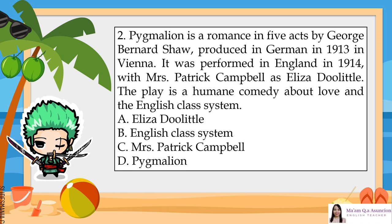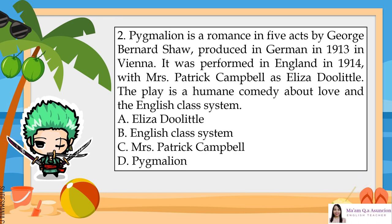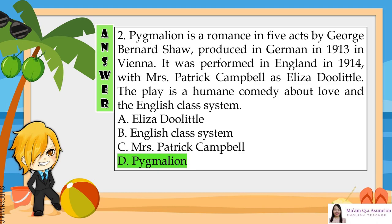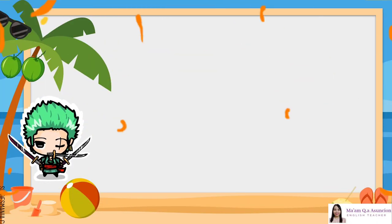2. Pygmalion is a romance in five acts by George Bernard Shaw, produced in German in 1913 in Vienna. It was performed in England in 1914, with Mrs. Patrick Campbell as Eliza Doolittle. The play is a humane comedy about love and the English class system. A. Eliza Doolittle. B. English class system. C. Mrs. Patrick Campbell. D. Pygmalion. The answer is D. Pygmalion.